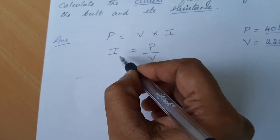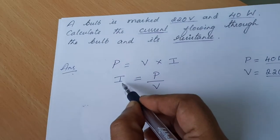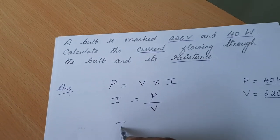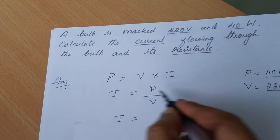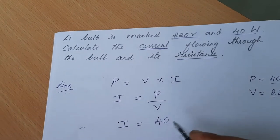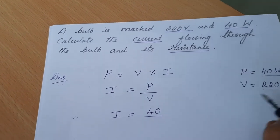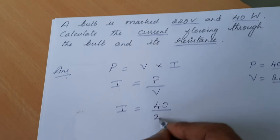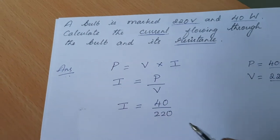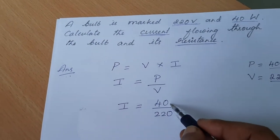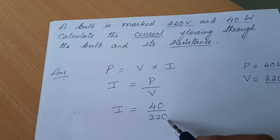After rearrangement we have got the formula to calculate current I. So I equals P. What is P given? It is 40 watt. What is V given? It is 220. So now let us divide 40 by 220.